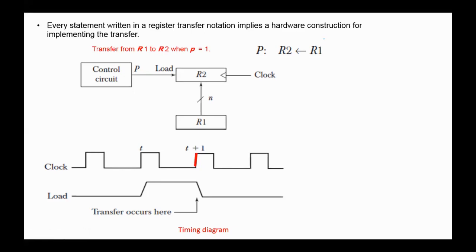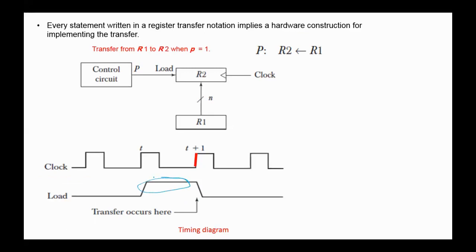Every statement written in register transfer notation implies a hardware construction for implementing the transfer. This is the hardware implementation for the transfer from register R1 to R2 if the condition b is true. To transfer the contents of R1 to R2, the control unit generates the control signal b, which is connected to the load input of R2. During the positive or rising edge clock pulse, the contents of register R1 are loaded into register R2. Note in the timing diagram: although we have load=1, the transfer will occur only on the positive edge of the clock pulse.